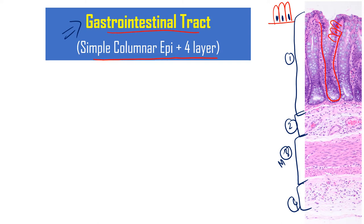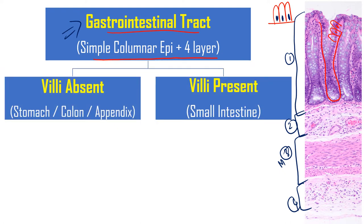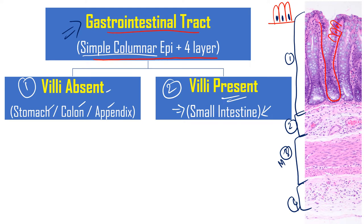If these four layers are present and the lining epithelium is simple columnar, you can label it as the gastrointestinal tract. The first thing to check is whether villi are present or absent. Based on the presence or absence of villi, we divide into two broad categories. If villi are present, it is only the small intestine — the only region in the complete GI tract with villi. If villi are absent, it may be stomach, colon, or appendix. It cannot be esophagus because the esophagus is lined by stratified squamous non-keratinized epithelium.